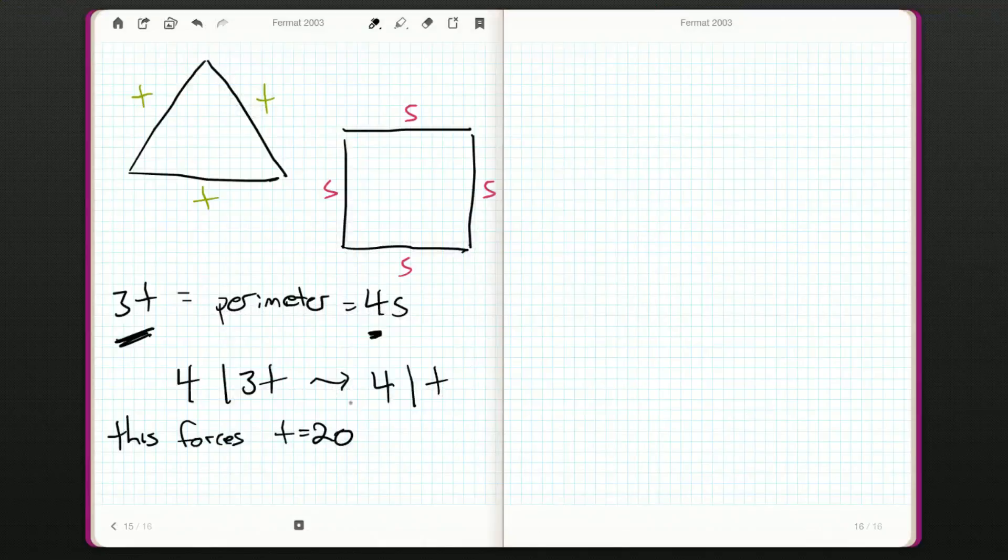We can do a little double check and make sure that s is also an integer. 3 times t is 4 times s. So that's 3 times 20 is 4 times s. So that's 60 is 4 times s. s is going to be equal to 15. So that is also an integer. That's a nice little side calculation.